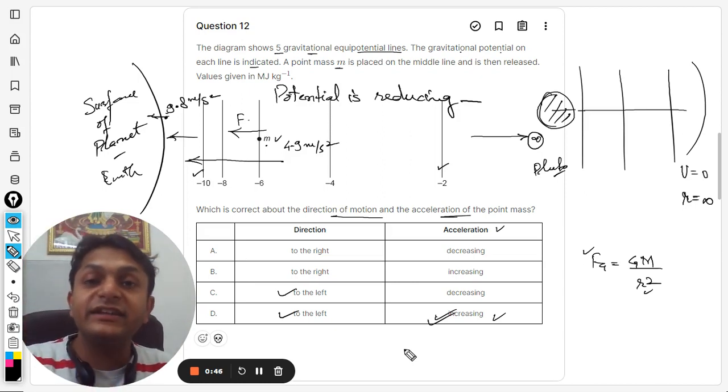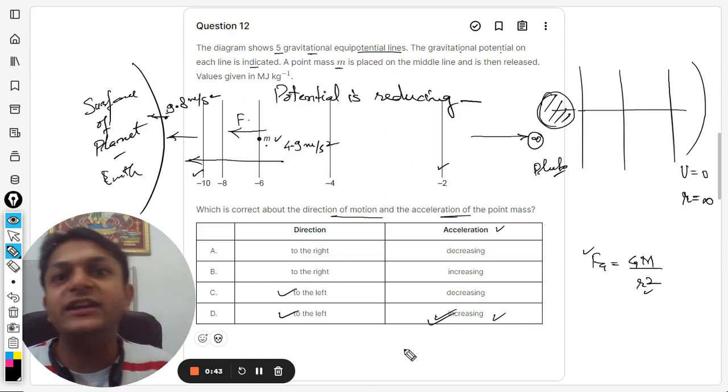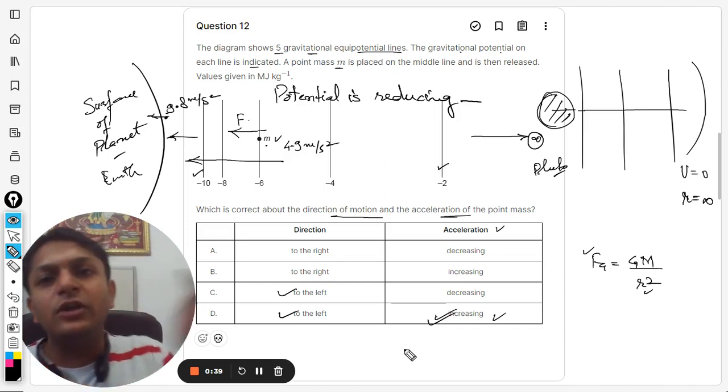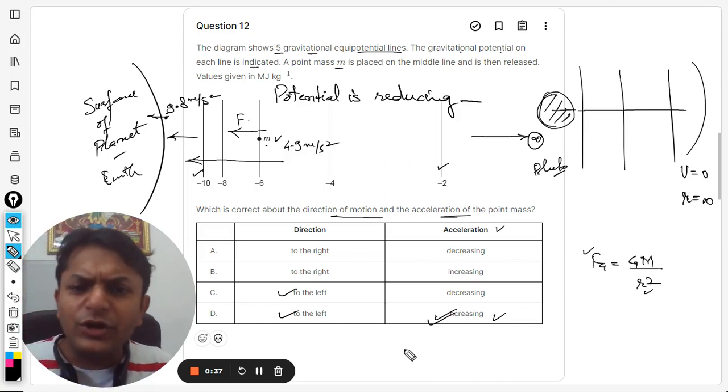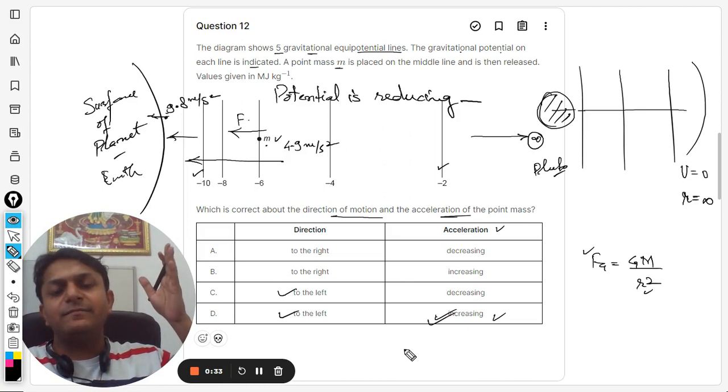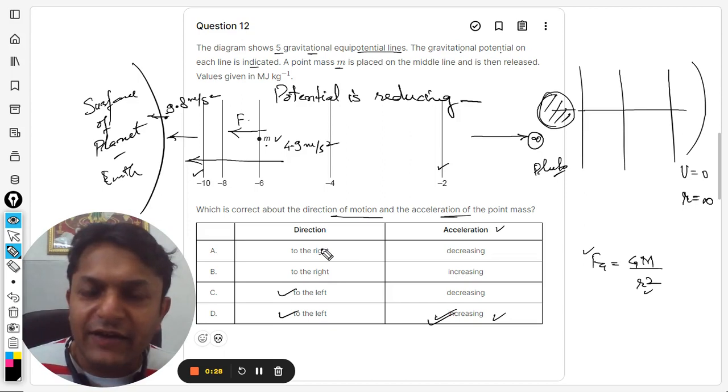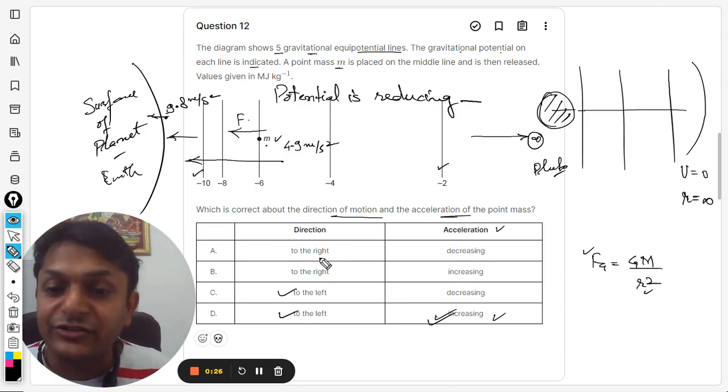Now, acceleration is always positive means the velocity is always increasing. But the question is not about velocity. It says even the acceleration is increasing. I hope the things are clear now. So it would be moving towards the left-hand side with an increasing acceleration.